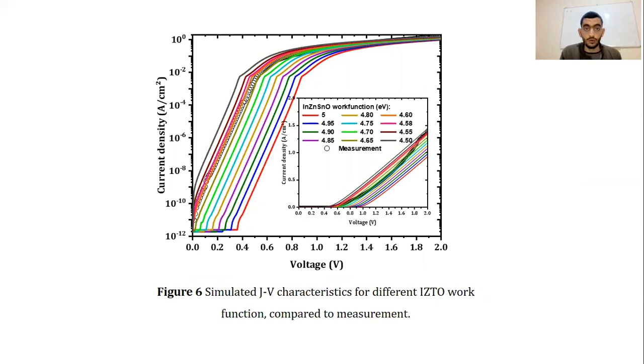In addition to the surface electron affinity, another important parameter was the indium zinc tin oxide work function. As presented in figure 6, the thermionic current decreased when the work function increased. This decrease is related to the increase of the Schottky barrier height according to the Schottky-Mott relation.